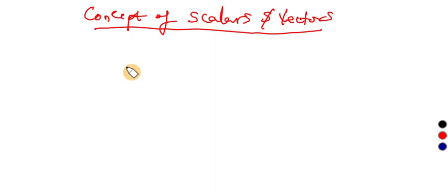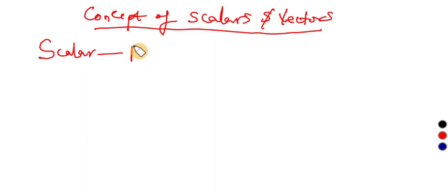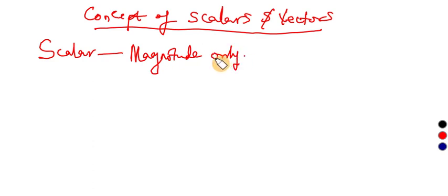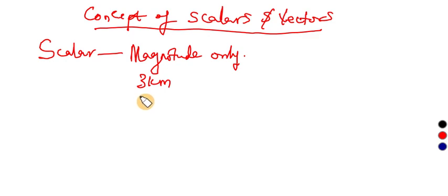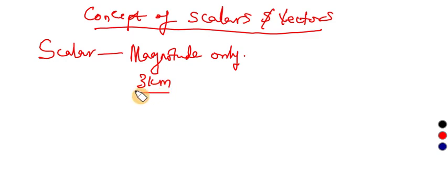What is a scalar quantity? A scalar quantity, or a scalar, is a quantity that has magnitude only. Magnitude means size. When I say that a man travels three kilometers, I have just made a mention of the magnitude or the size of the travel. This is a scalar quantity — I have not made any reference to the direction.